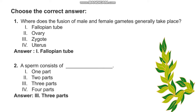Sperm consists of how many parts? The options are: 1 part, 2 parts, 3 parts, 4 parts. The answer is 3 parts.